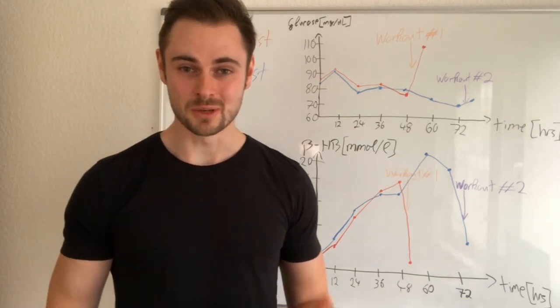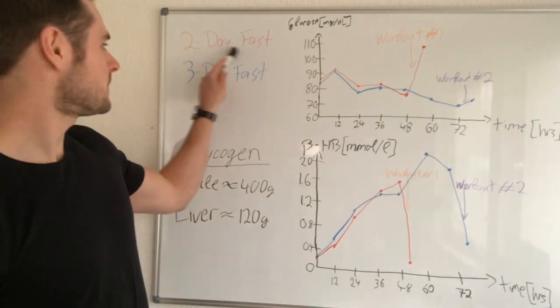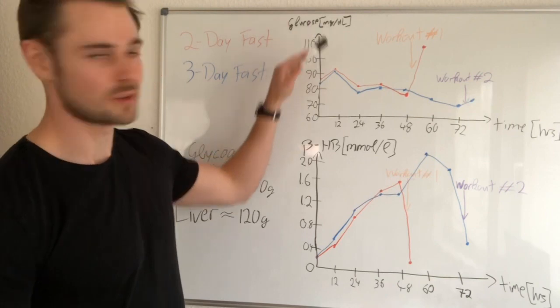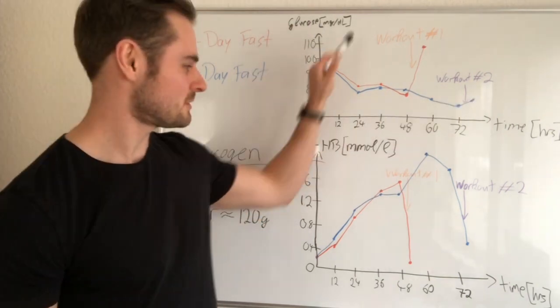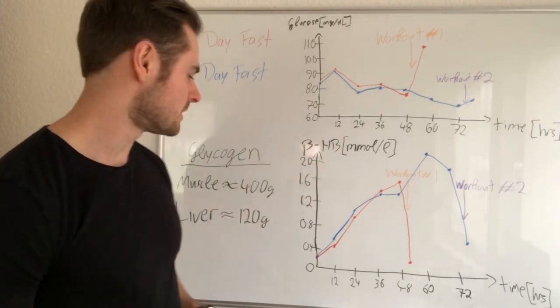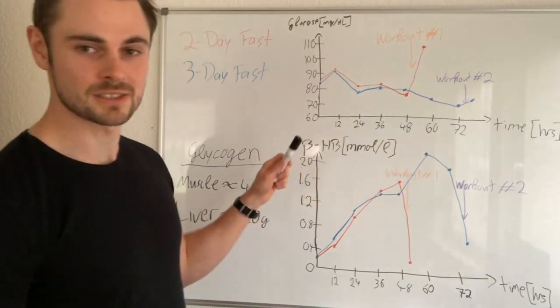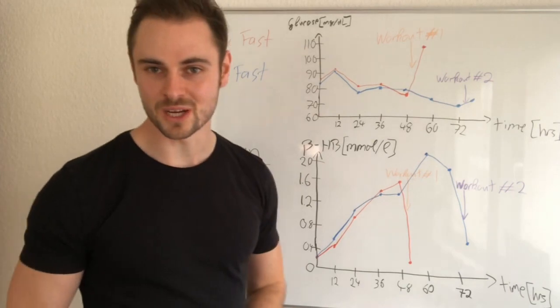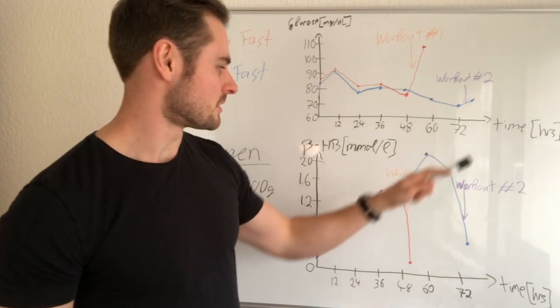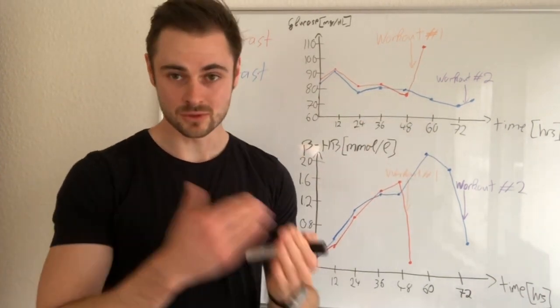The results are actually pretty interesting, and this is what the video is gonna be mainly about. So we have the two-day fast in red and the three-day fast in blue. We have my glucose blood levels on the top graph and the beta-hydroxybutyrate levels - the blood ketone levels - on the lower graph here. We have time on the x-axis and concentration on the y-axis.